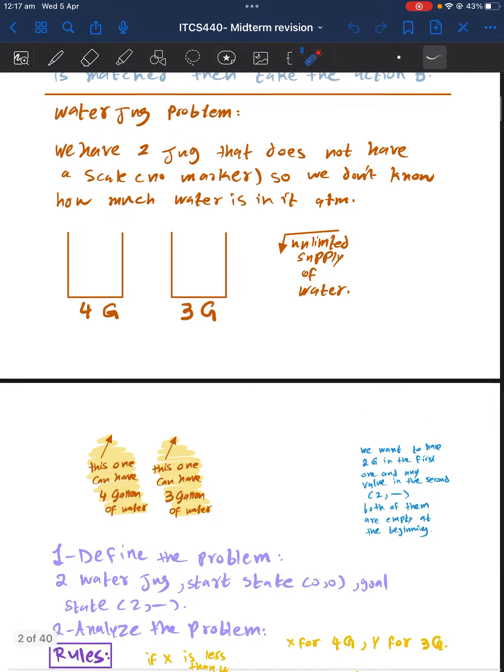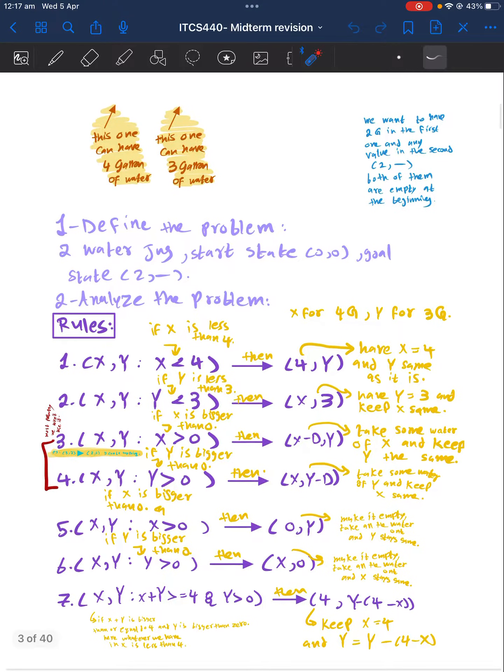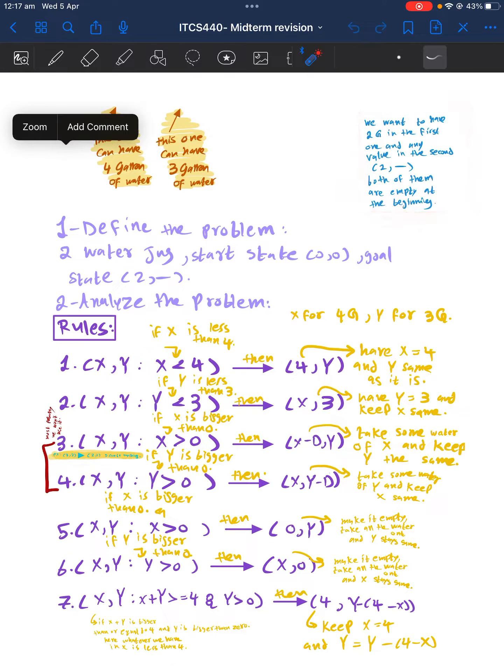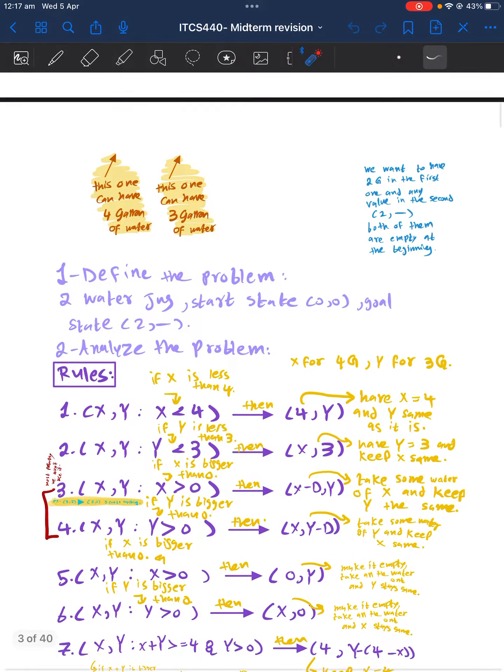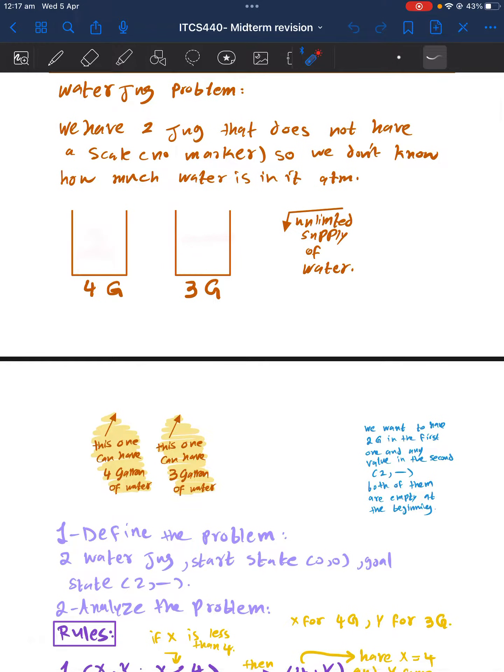So here we define the problem and our goal state that we want to reach is two gallons of water in the first one, and we don't care about the second one.